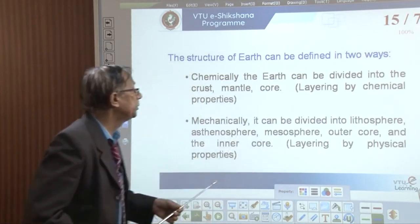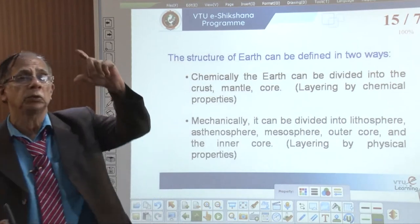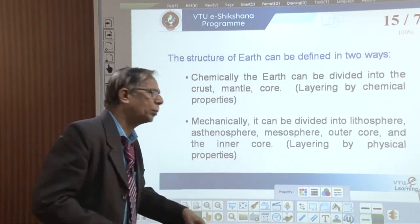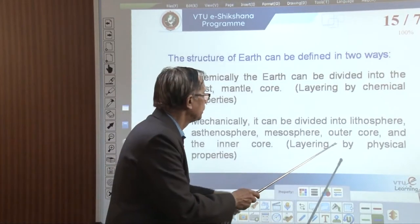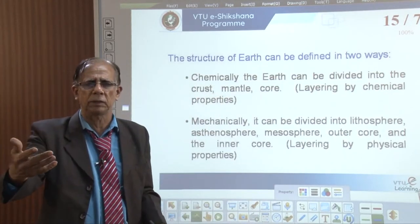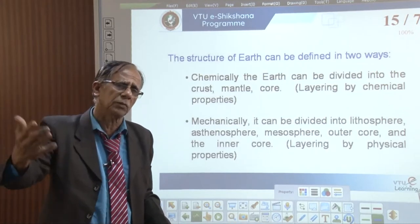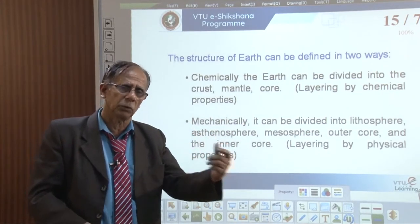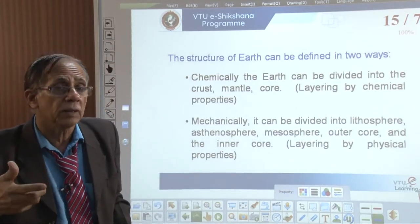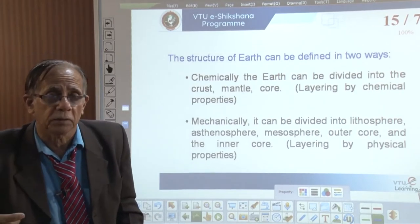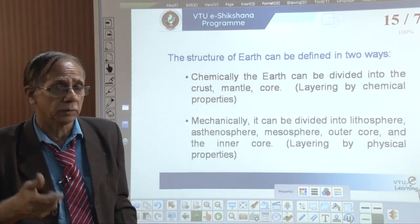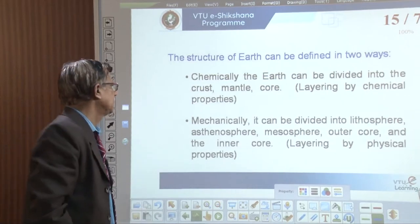Mechanically, earth is divided into the lithosphere — the uppermost rigid, hard layer — then the asthenosphere, which is somewhat plastic-like, then the mesosphere, then the outer core, and then the inner core, which is very high density material that responds differently to elastic waves like earthquake waves. These mechanical properties govern shear strength, load-bearing capacity, and the travel of elastic waves.